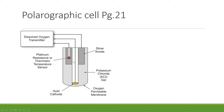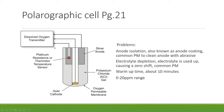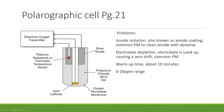A more realistic view of the polarographic cell shows all components in one housing: silver anode, KCl fill fluid, oxygen-permeable membrane, gold cathode, and temperature compensation. Common problems include anode coating — cleaned with a mild abrasive such as a cotton cloth or paper towel as a PM task — and electrolyte depletion, which causes a zero shift. In modern practice, cells are typically replaced rather than refilled.